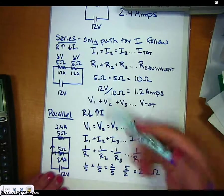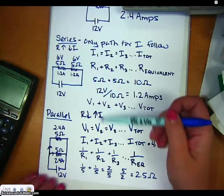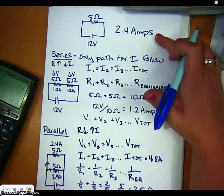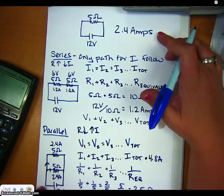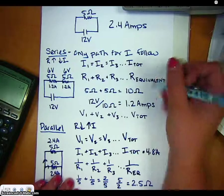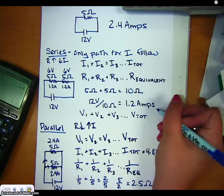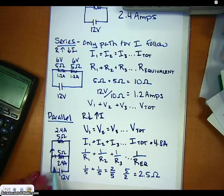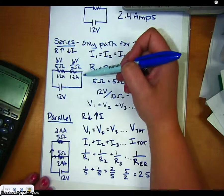So parallel resistors actually make the current, if we compare here, makes the current go up and makes the resistance go down, whereas series circuits make the resistance go up and the current go down. If we were to look at the brightness of these bulbs, because there's higher current, these bulbs would be brighter than the series bulbs.